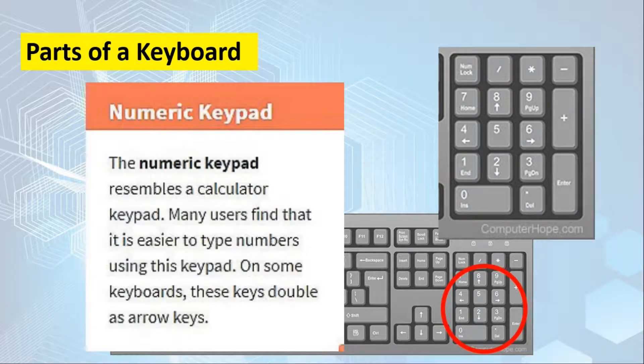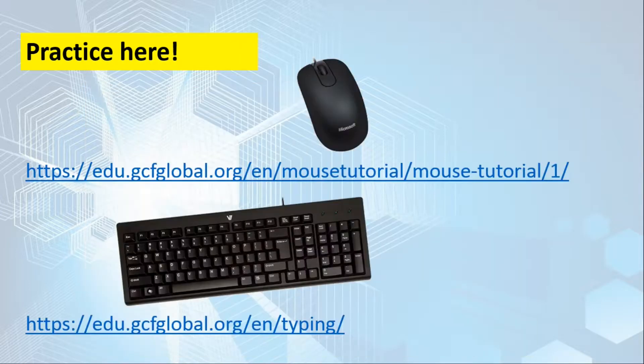And the numeric pad. The numeric pad, or keypad, resembles a calculator keypad. Many users find it easier to type numbers using this keypad. On some keyboards, this doubles as arrow keys. That's why numbers 2, 4, 6, and 8 have arrows. Accountants often use the numeric keypad to type documents, numbers, and specific formulas. Some keyboards don't have the numeric pad available. On laptops, the numeric keypad is often not available.